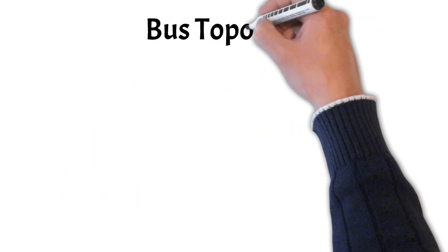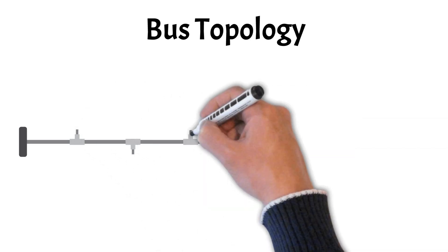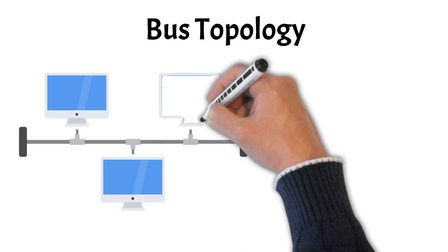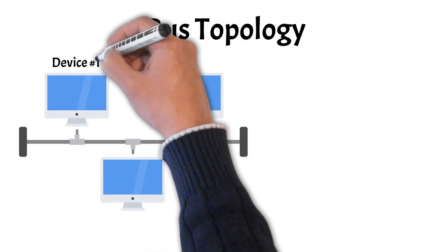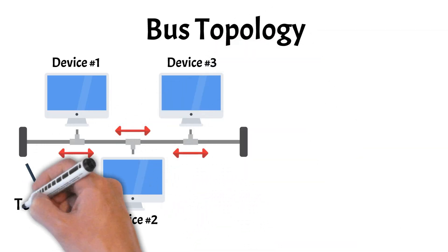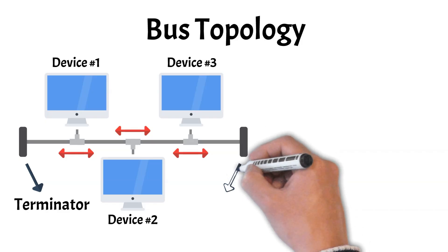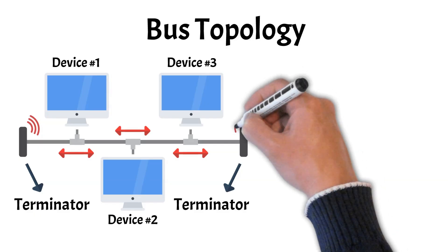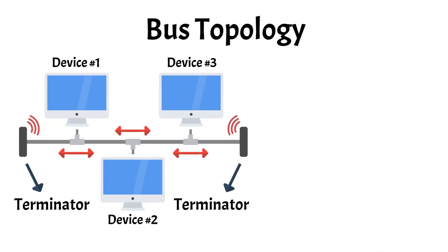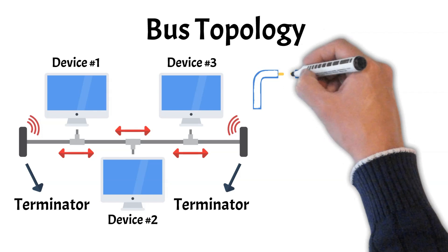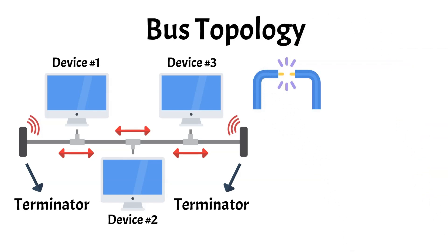First, we have the bus topology. In a bus topology, all devices are connected to a single central cable called the backbone. When one computer sends data, the signal travels in both directions along this cable until it reaches the right destination. Terminators should be placed at each end of the backbone cable — they keep signals from bouncing back and causing interference, which can degrade performance and reliability. If the backbone is damaged, the entire network stops working because everything depends on that one cable.